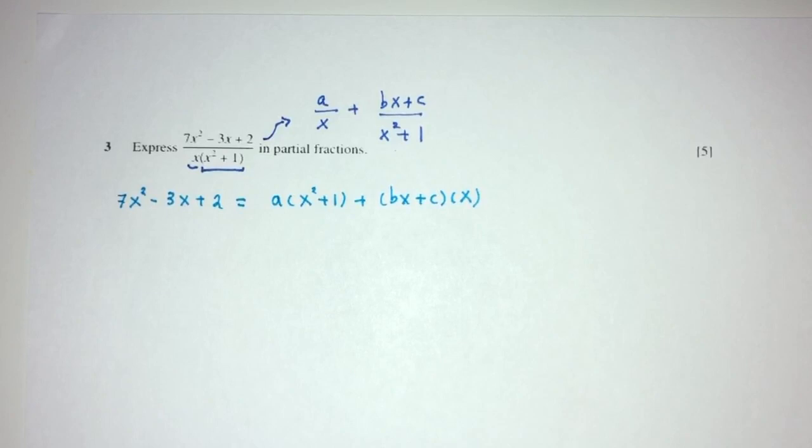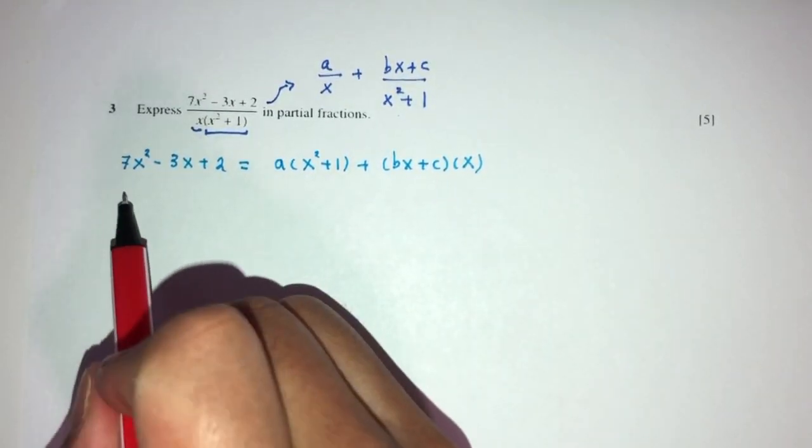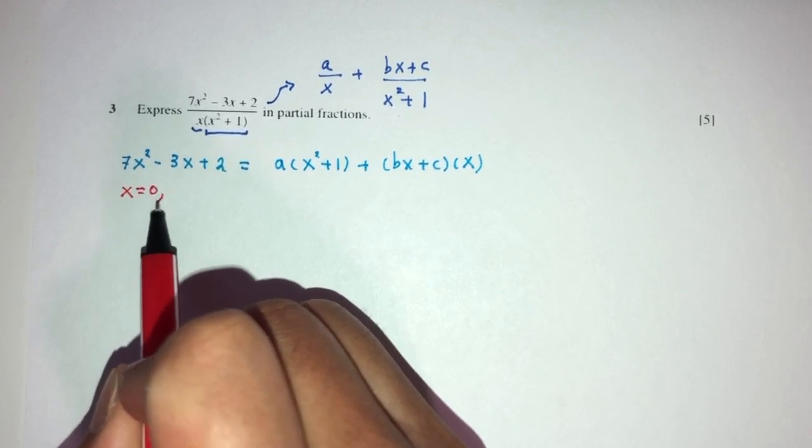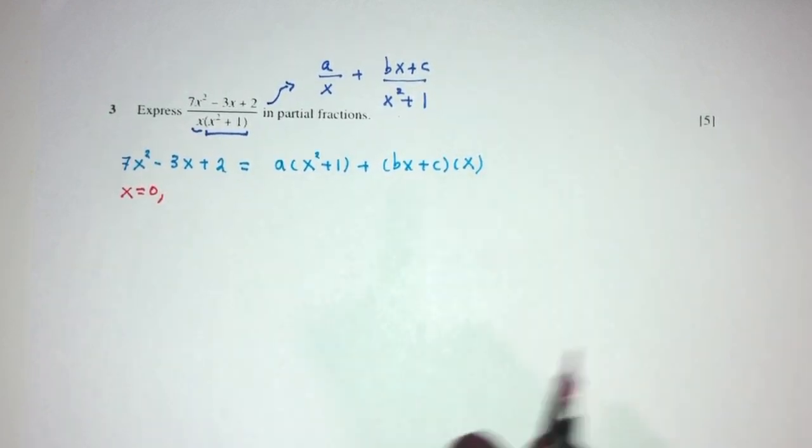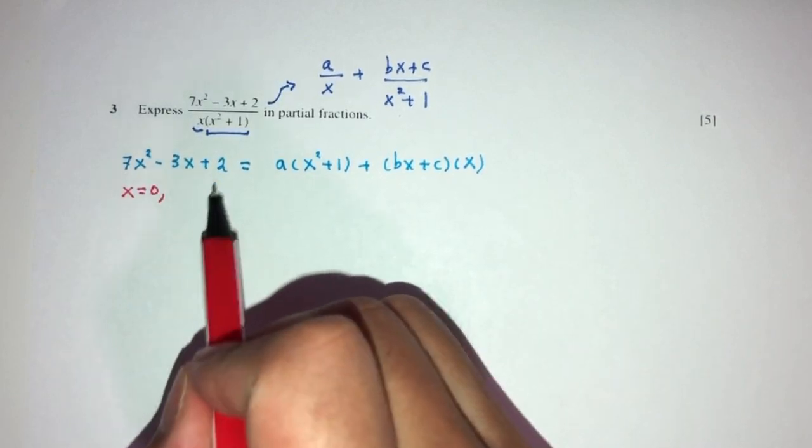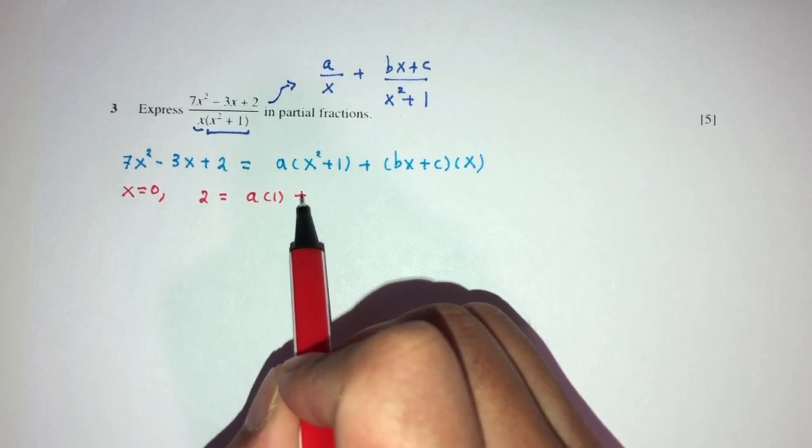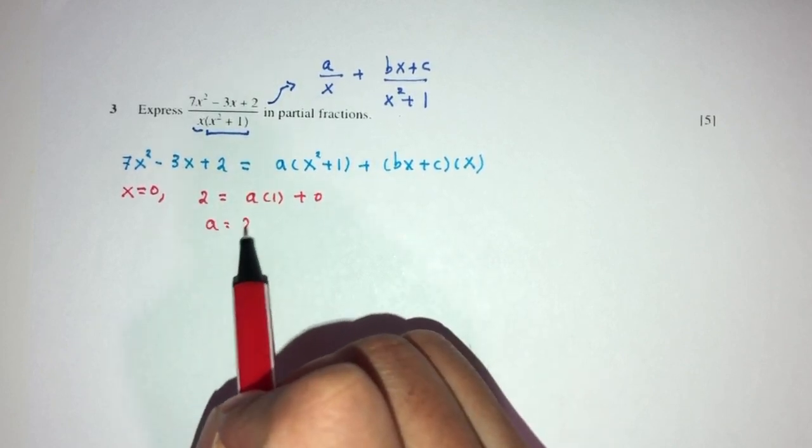But we have to find the values of a, b, and c. Let's play with x to find that. For example, I can say, well, let x become 0. Now, you can choose anything you want to. Just choose something that will make your life easy. So, here you will have 2 on the left hand side. So, it is equal to a times 1 plus 0. So, a will be the value of 2. This is part 1.